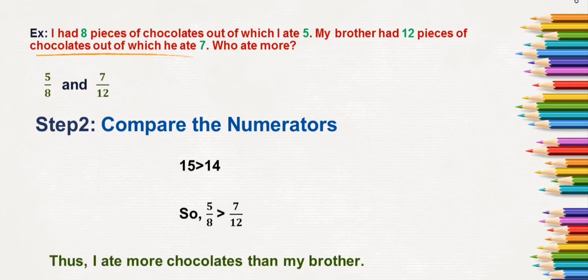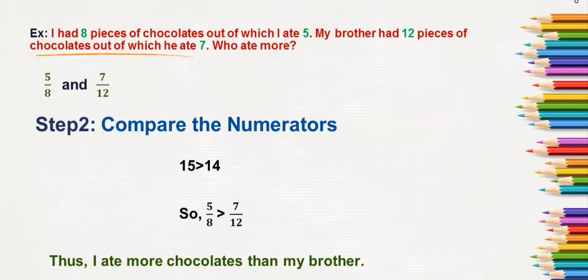So students, this is how we compare unlike fractions. First, find the LCM of the given denominators. Then make the denominators equal to the LCM. Then compare the numerators, as the denominators will now be the same.